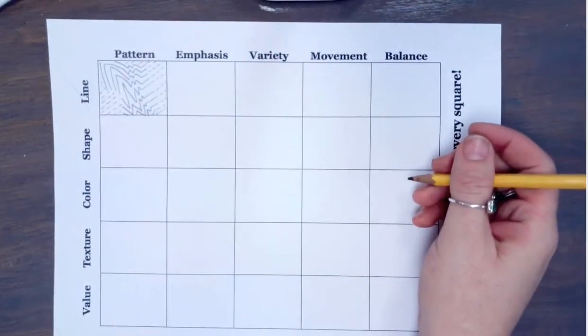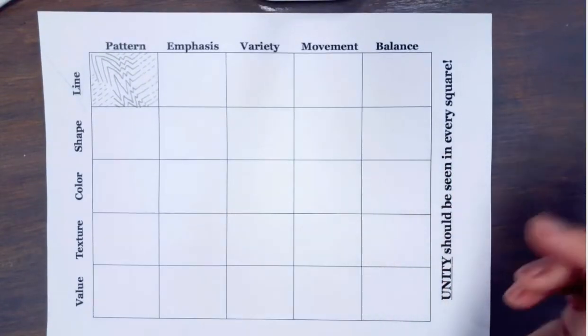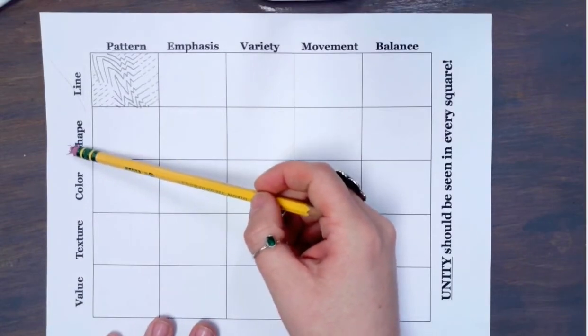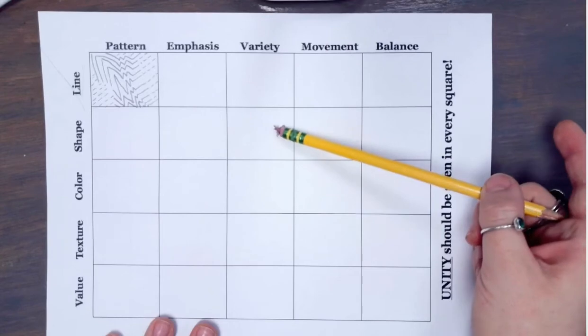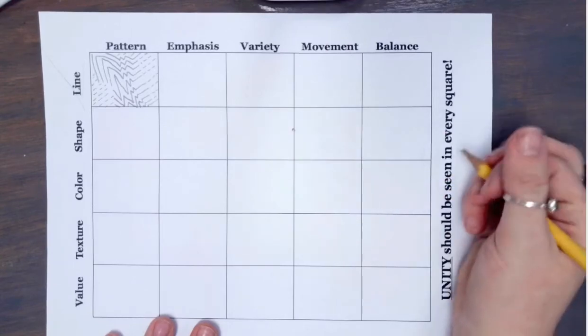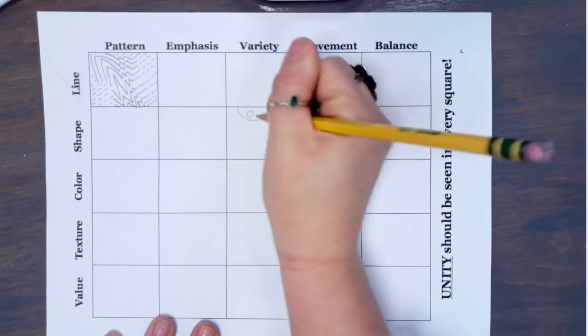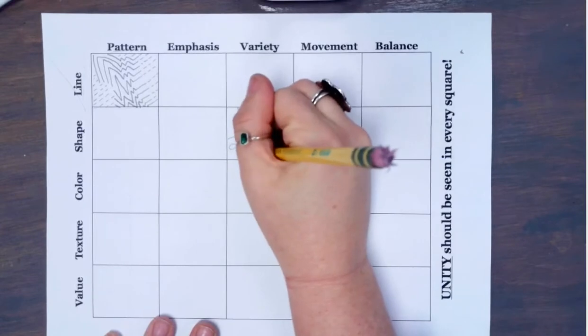After you complete one square pick another square to go to. I'm gonna jump around you can go in order it's really up to you. So I'm gonna look at shape and then I'm going to scroll all the way to variety. Okay so that's the third square on my shape row. Variety means that we add a lot of different things. There's a variety of different shapes in your square.